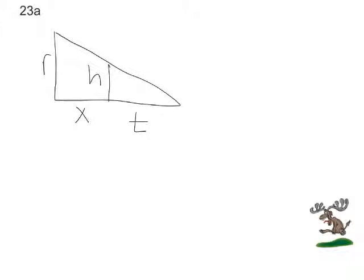23A is asking us to express x in terms of the other variables in the picture. We're given a triangle inside of a triangle, with T, H, X, and R. When we have a case like this, and we'll see this a couple times in calculus, what we can conclude using geometry is that the smaller triangle is similar to the larger triangle. In other words, the ratio will be the same.